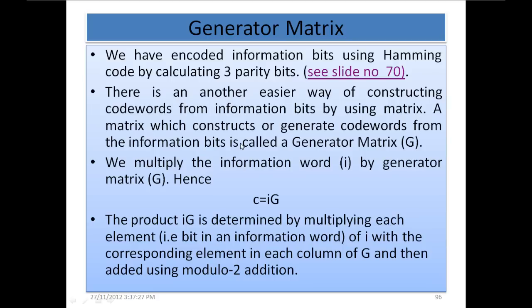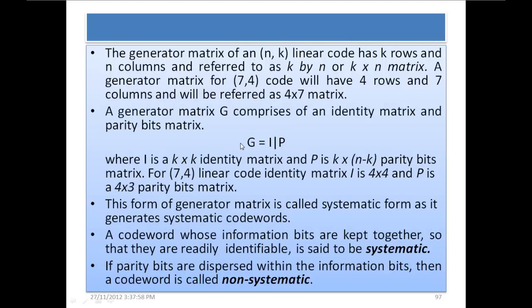We multiply the information word i by the generator matrix G, so c = i × G. The product iG is determined by multiplying each bit in the information word with the corresponding element in each column of G, then adding using modulo-2 addition. The generator matrix of an (n,k) linear code has k rows and n columns, referred to as a k×n matrix. A generator matrix for a (7,4) code will have 4 rows and 7 columns, referred to as a 4×7 matrix.